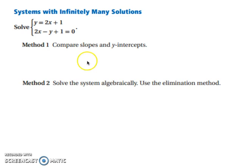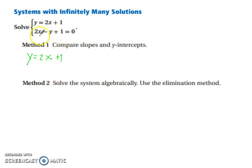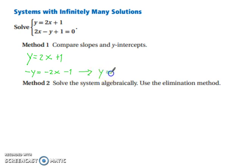Once again, we have two methods: we can compare slopes and y-intercepts, or we can solve the system algebraically. Let's get them into slope-intercept form. Our first one is ready: y equals 2x plus 1. For the second equation, we move the 2x and the 1 to the other side, leaving negative y equals negative 2x minus 1. Since y is not entirely by itself, we multiply by negative 1, giving y equals 2x plus 1. The two lines are the exact same graph, meaning if you were to graph them, one line would sit right on top of the other, so there are infinitely many solutions.